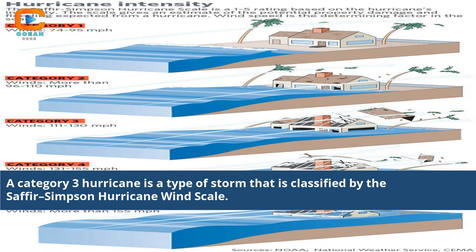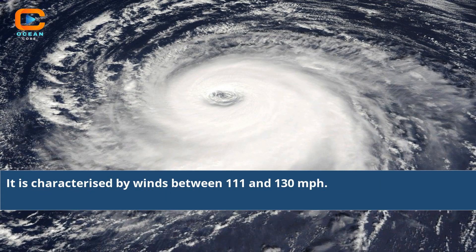A Category 3 hurricane is a type of storm classified by the Saffir-Simpson hurricane wind scale. It is characterized by winds between 111 and 130 miles per hour.